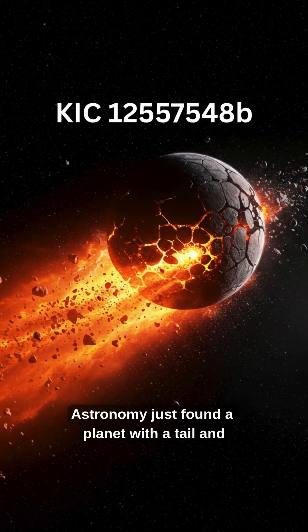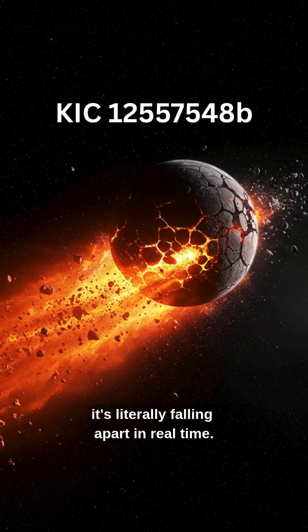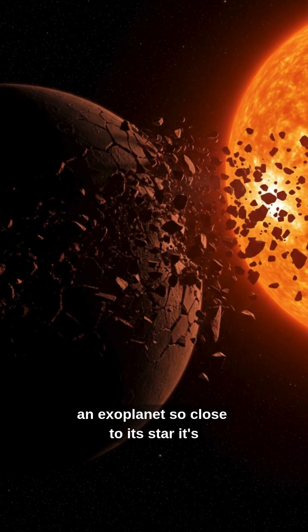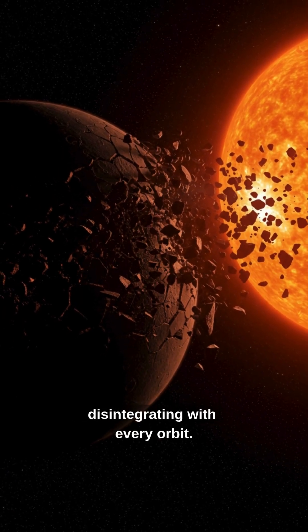Astronomy just found a planet with a tail and it's literally falling apart in real time. This is KIC 12557548b, an exoplanet so close to its star it's disintegrating with every orbit.